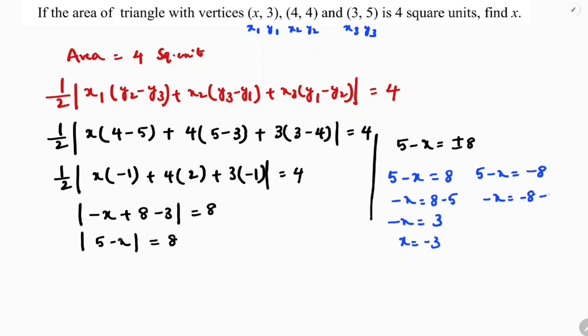Second case: 5 - x = -8. So -x = -8 - 5 = -13. The negatives cancel, giving x = 13. Therefore x = 13 or x = -3. Both are valid values for x.